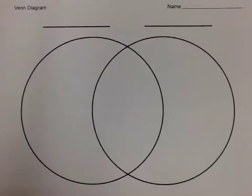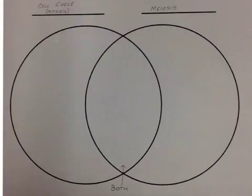This is a Venn diagram. You will find this Venn diagram on your Schoology page underneath the portion of the unit of cell cycle in meiosis. The left-hand circle is going to correspond to cell cycle, or mitosis, and the right side is going to be for meiosis. In the center, there is a place for information that pertains to both mitosis and meiosis.